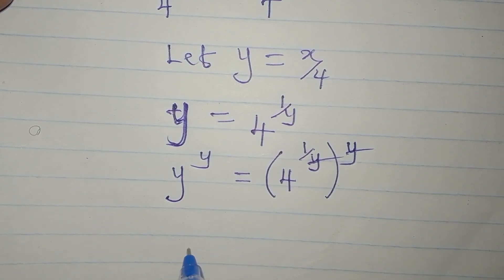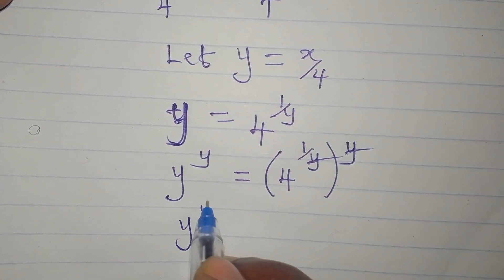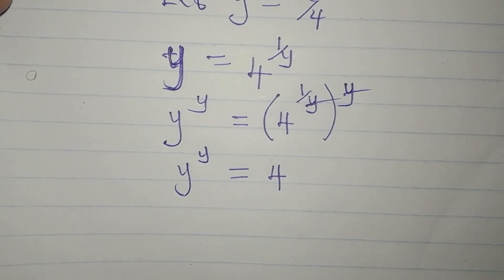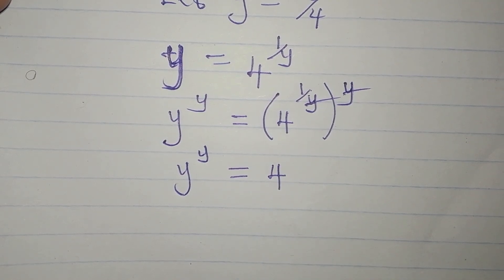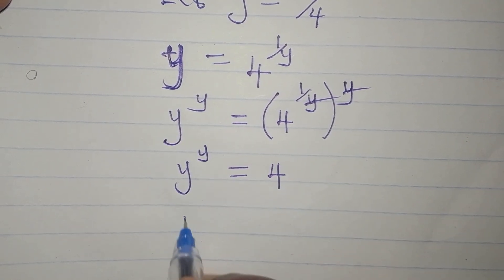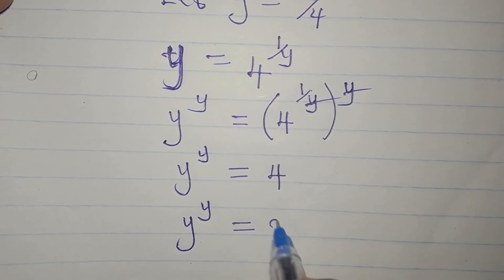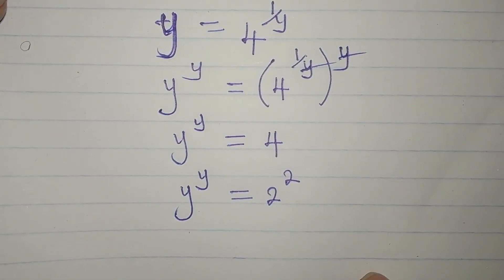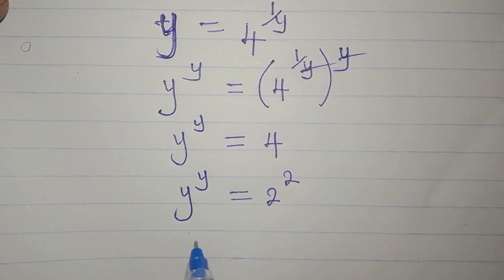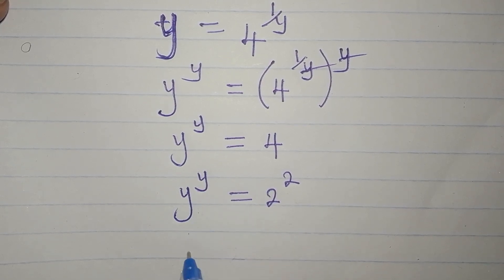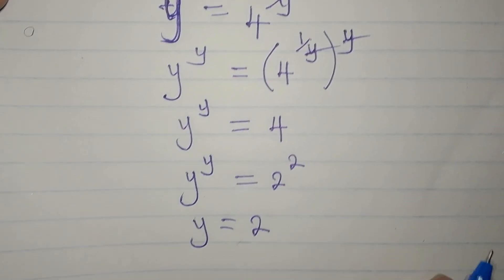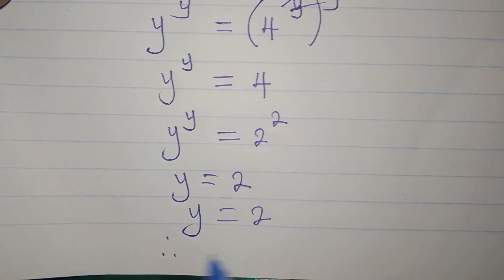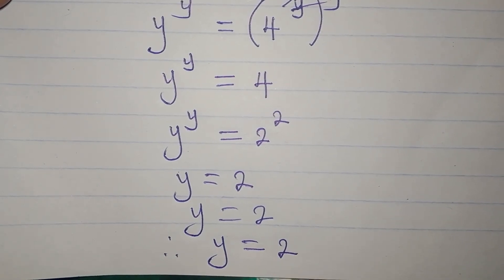So we now have y to the power of y equals 4. We can write 4 in index form as 2 to the power of 2, giving y to the power of y equals 2 to the power of 2. Comparing both sides, from the base y equals 2 and from the power y equals 2, therefore y equals 2.